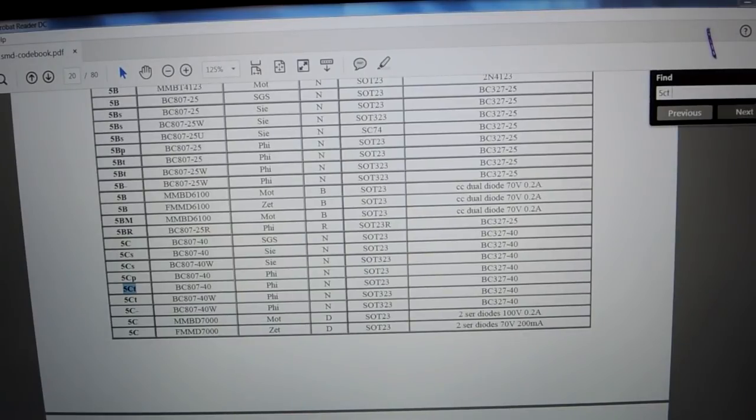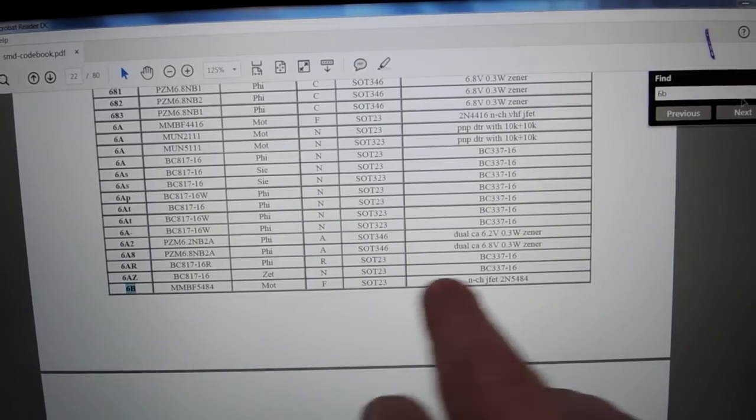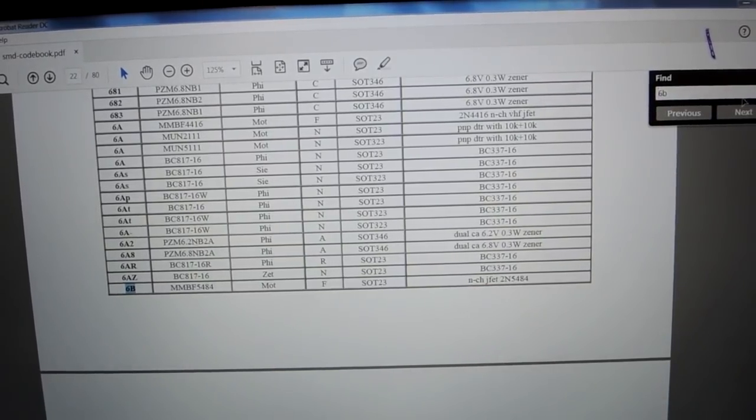I think we're going to find that to be a FET if I recall correctly. Let's just try this out. 6B, sure enough, N-channel FET. So this is going to help us decode what we're looking at in terms of this assembly.